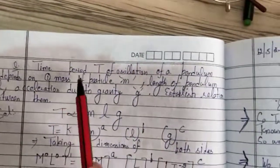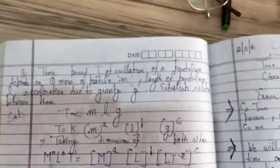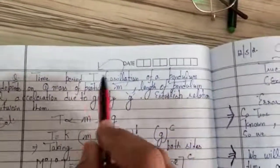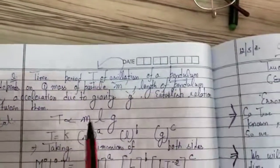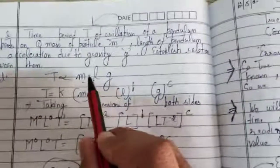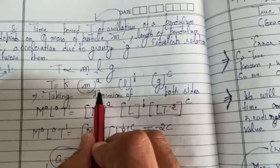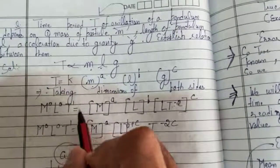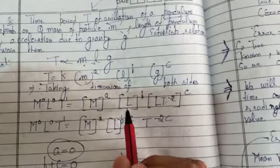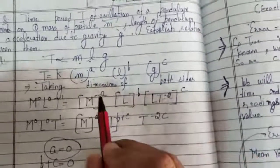Let's take another example: the time period T of oscillation of a pendulum. The time period depends on the mass of the particle, the length of the pendulum, and acceleration due to gravity. We assume powers a, b, and c for these quantities. The dimension of T is M⁰L⁰T¹. Mass has dimension M, length has dimension L, and acceleration due to gravity has dimension LT⁻².